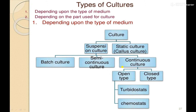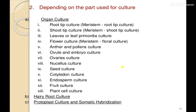So to recap: culture is divided into two types based on medium — suspension culture and callous culture. Suspension culture is subdivided into batch culture, semi-continuous culture, and continuous culture. Continuous culture is subdivided into open type and closed type, and open type is subdivided into turbidostat and chemostat. The second category, depending on the part used for culture, includes organ culture, hairy root culture, protoplast culture, and somatic hybridization.